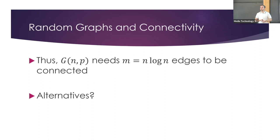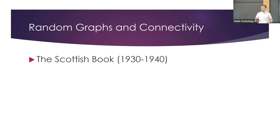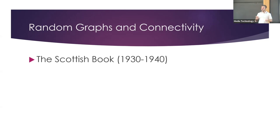There are obviously alternative models for generating random graphs. The model I'm going to discuss right now was actually introduced much earlier than the Erdős-Rényi model — it was introduced in the Scottish Book. The Scottish Book comes from a famous university in Poland where people like Ulam and Banach were working. They and other mathematicians spent many working hours in a local coffee house called the Scottish Café.